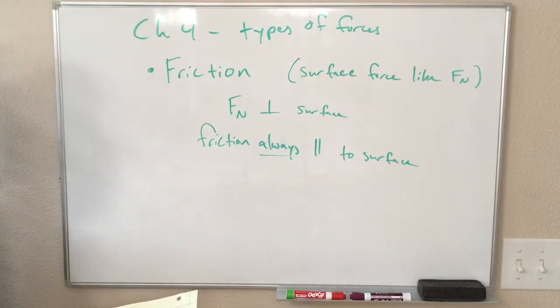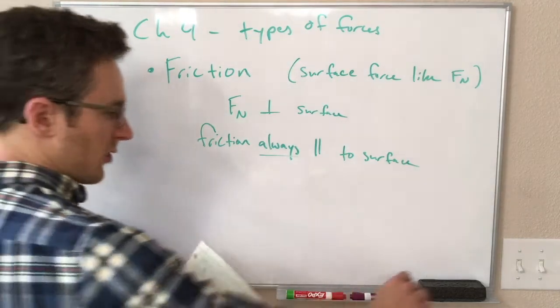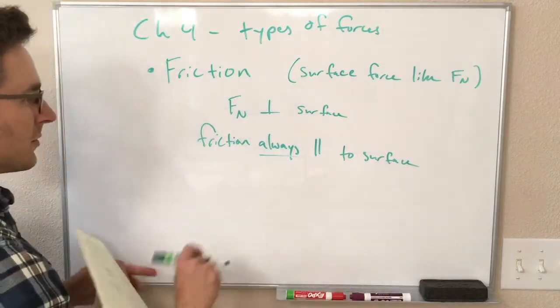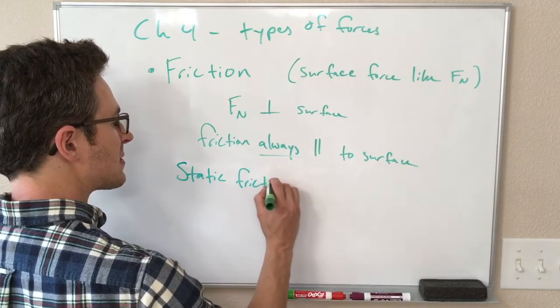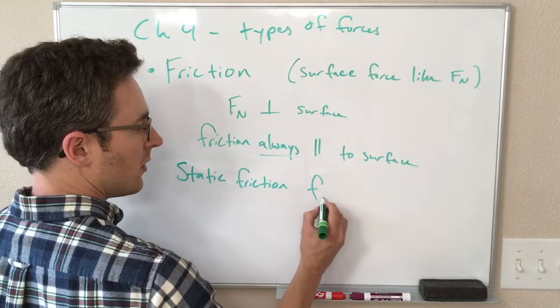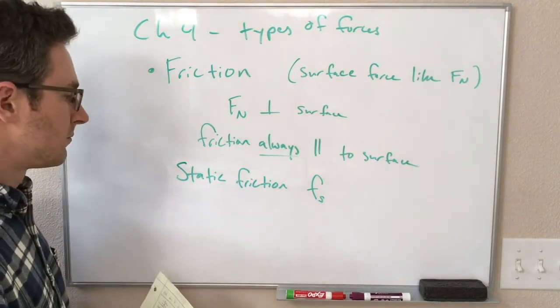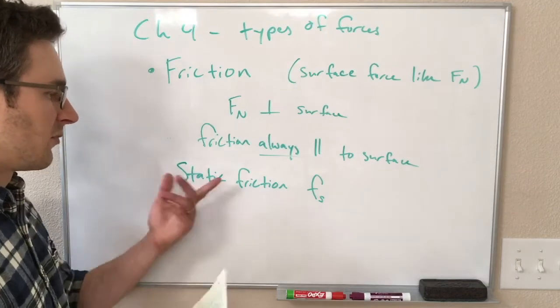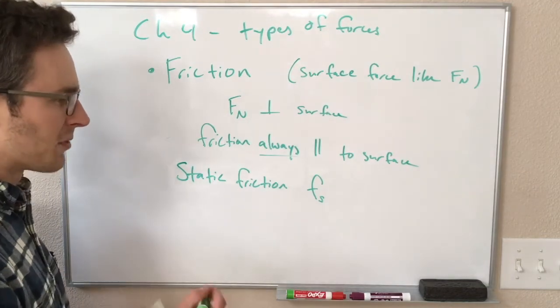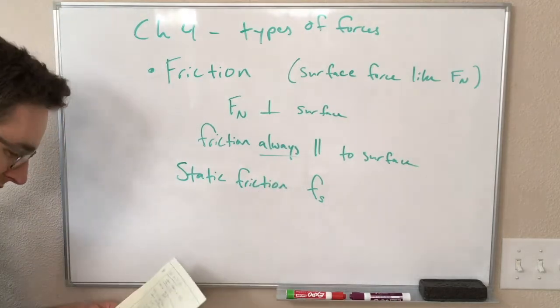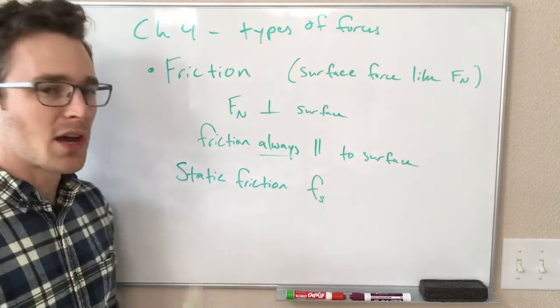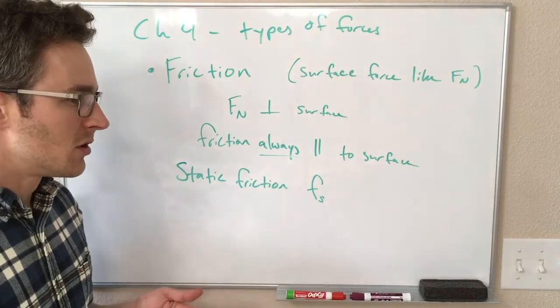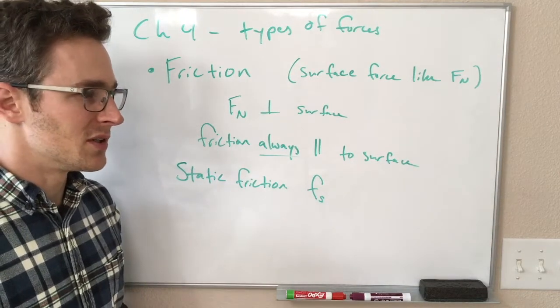We have two different kinds of friction that we're going to learn about. The first is what we call static friction. So for that we use a lowercase f with an s subscript. Lowercase f for friction. So our static friction, this is the kind of friction we have where an object is trying to move against a surface, but it is unable to do so.